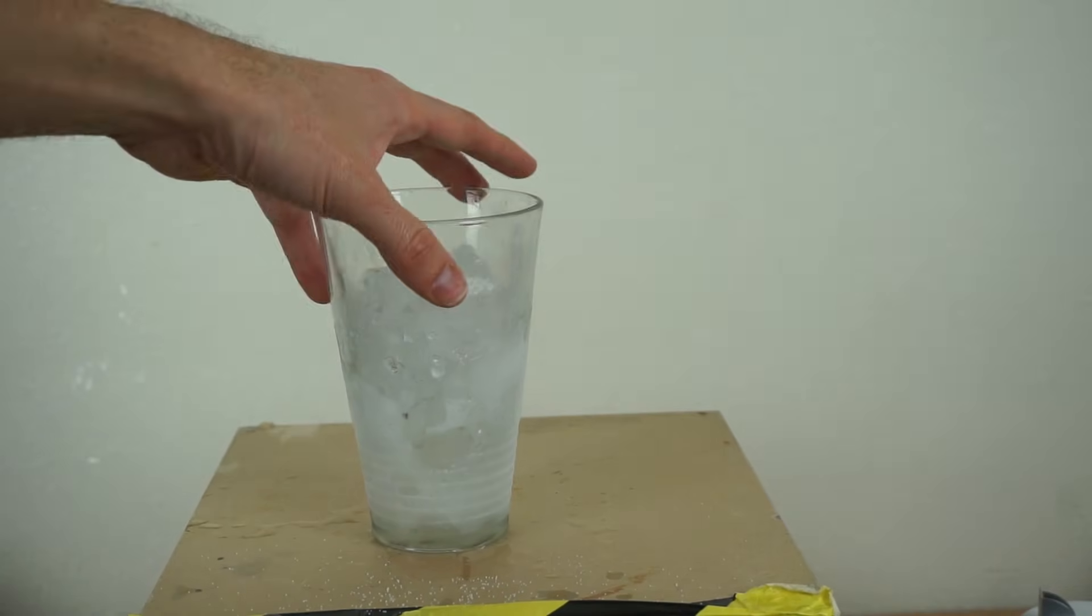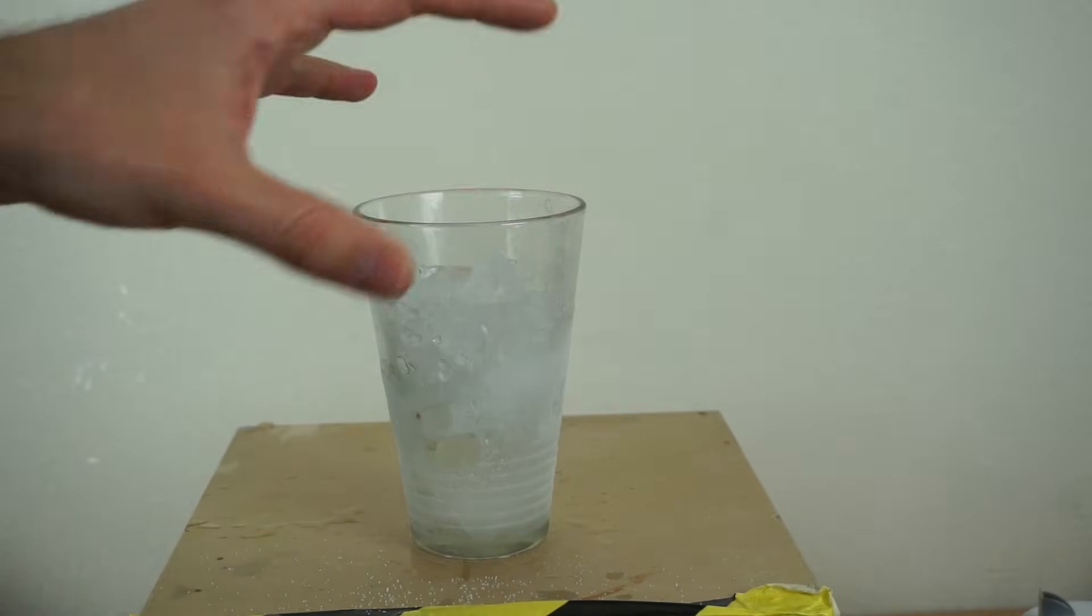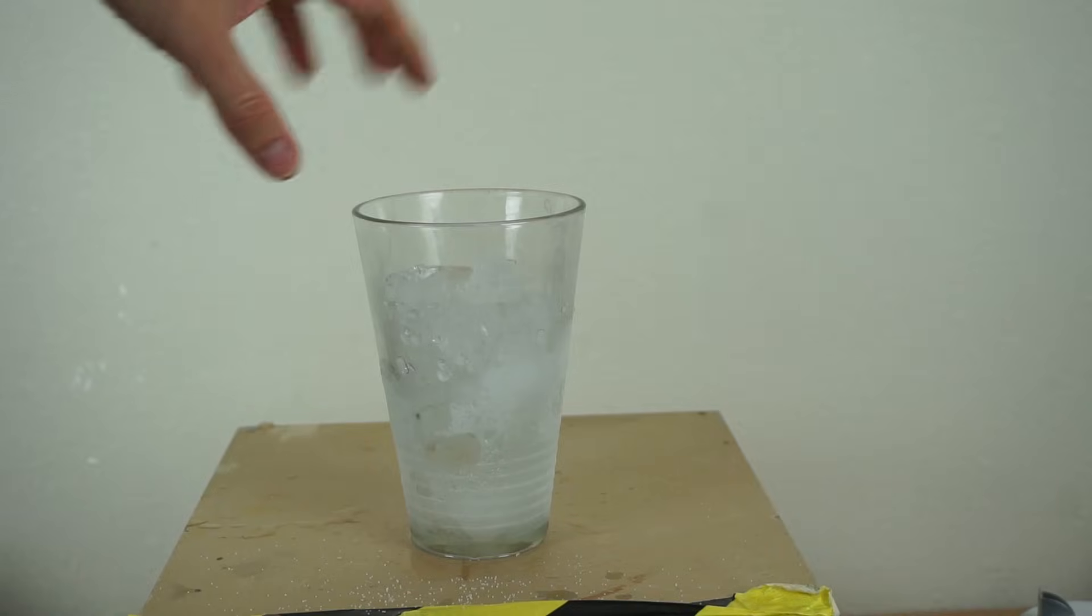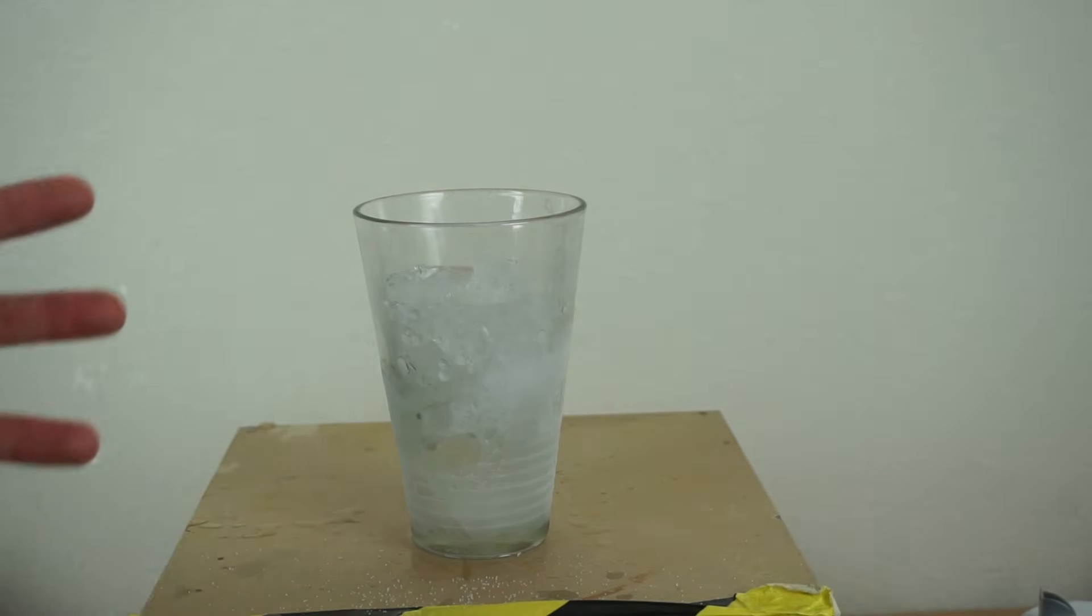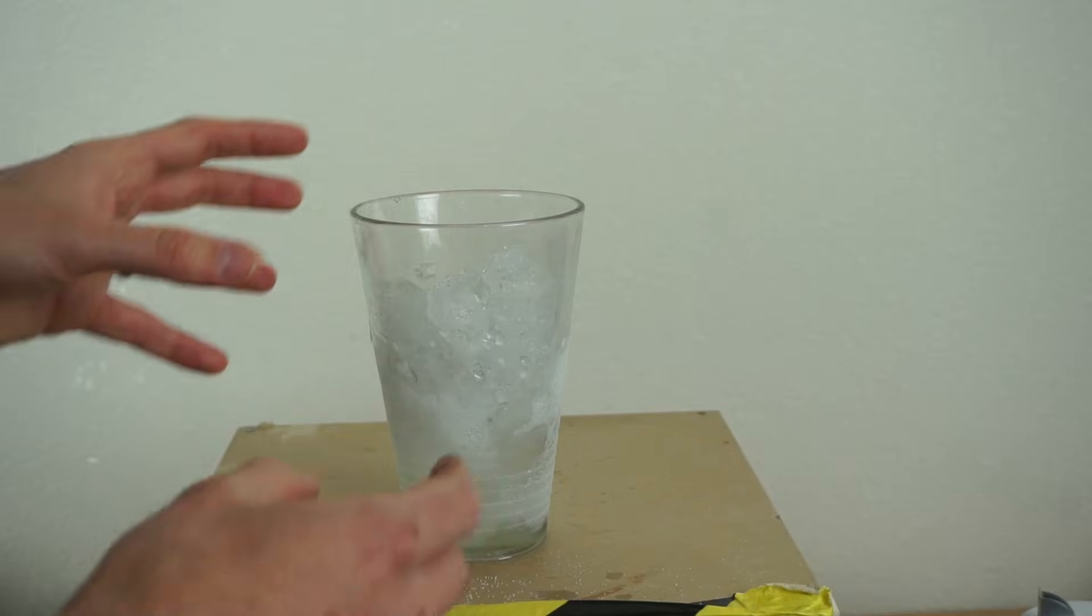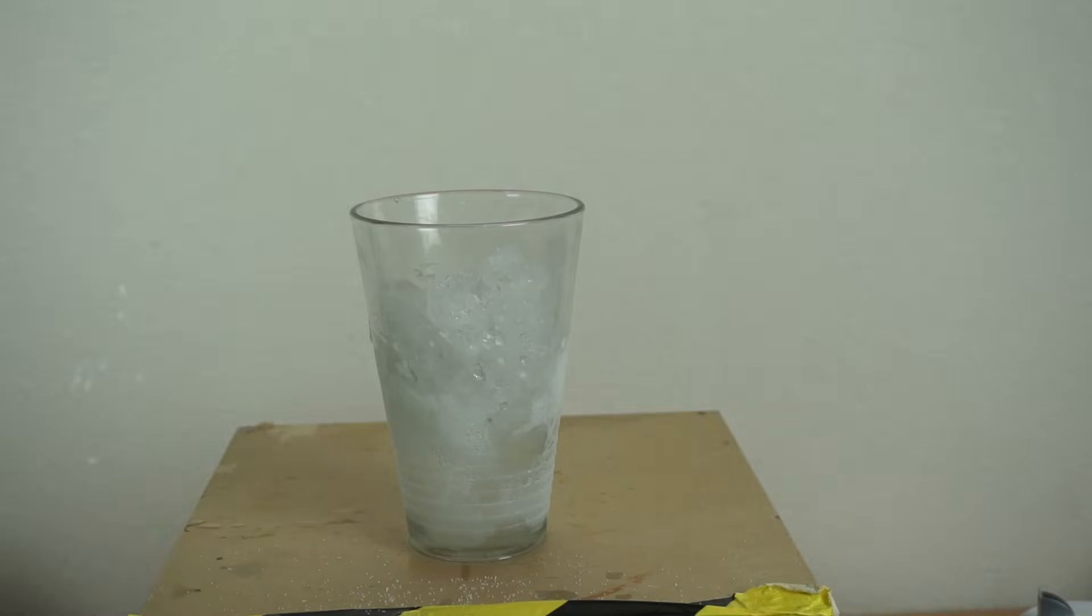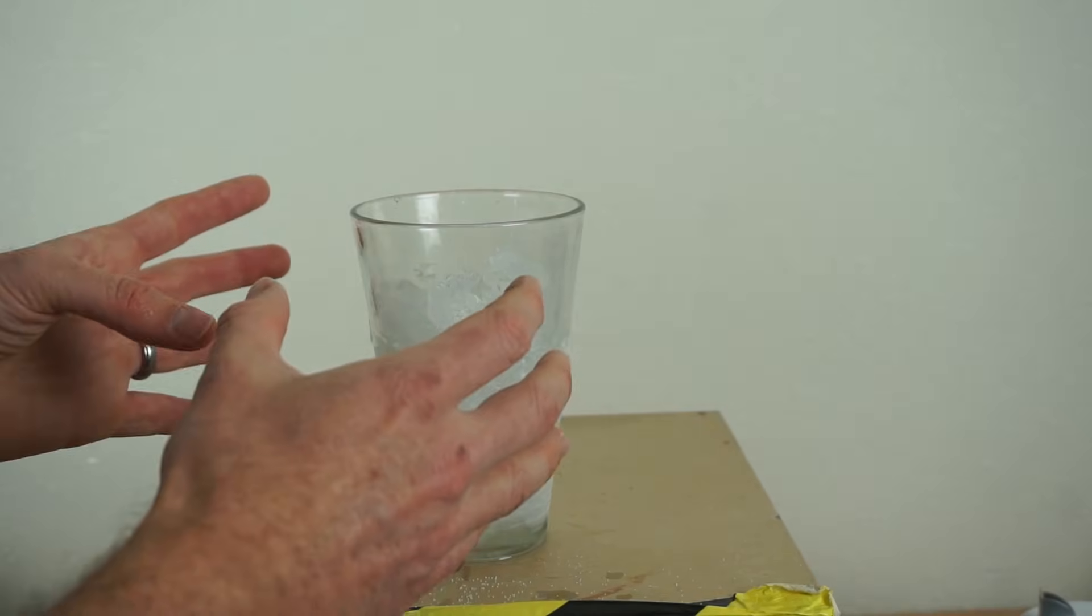And if you've ever made homemade ice cream before, this is why you put salt on the ice on the outside of the turning bucket. Because when it dissolves in the ice it makes it colder. And another reason you do that is because it makes more liquid water so you can transfer the heat out of the ice cream quicker.